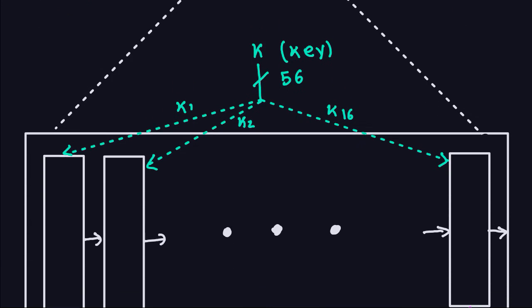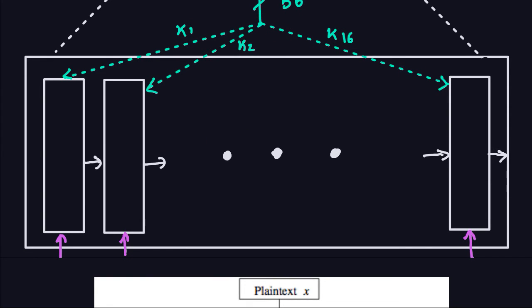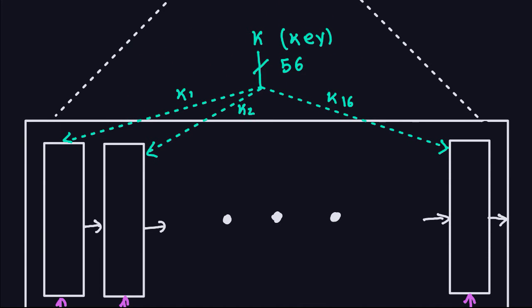In that box we have 16 rounds. Each one of those rounds does all the confusion and diffusion, and every round uses a sub-key. Every sub-key — K1 through K16 — comes from the actual key, which is a 56-bit key. The process of getting those keys from the key K is called the key schedule, which we will see later.